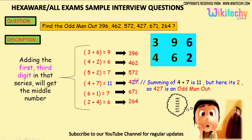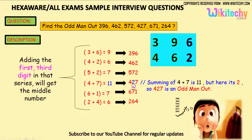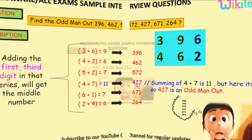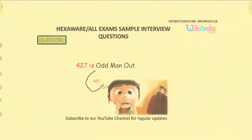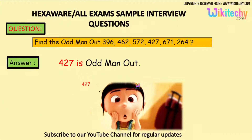6 plus 1 is 7, and 2 plus 4 is 6. So here is the odd man — the odd man is 4, 2, 7. That's the answer. 4, 2, 7 is the odd man out from the series.